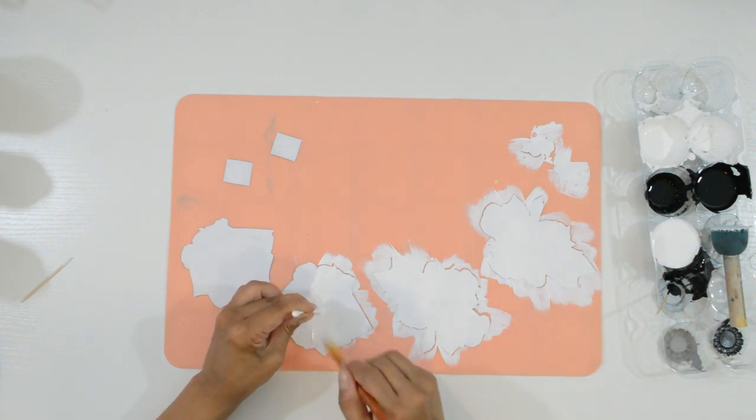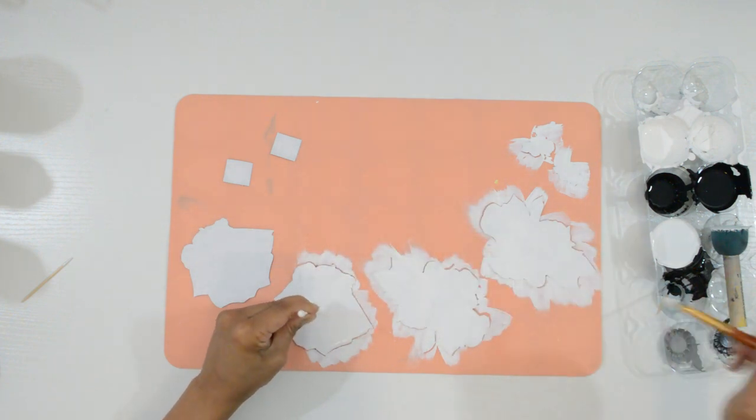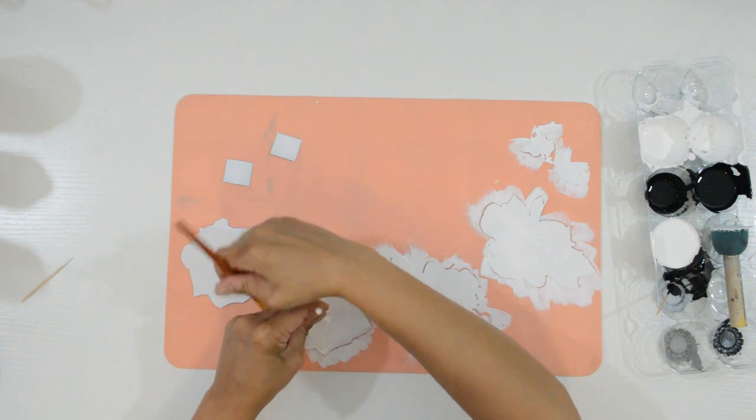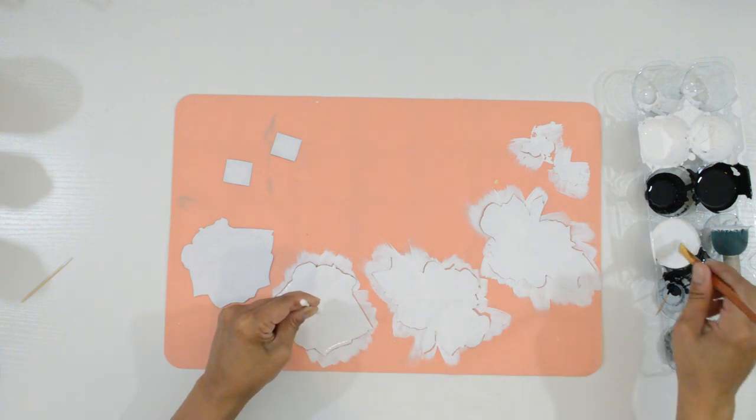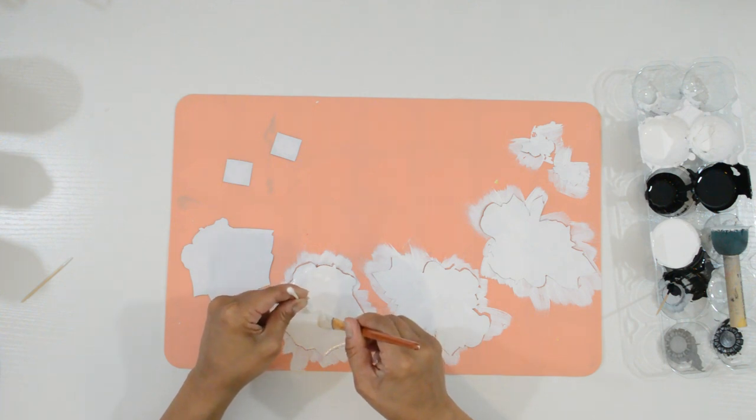The reason you can decoupage this and not paper napkins onto a dark surface is that it's thicker and has a white base, unlike the thin paper napkins. Let's say you have a paper napkin with the design you want, but you can't use it because you want to decoupage it onto a dark base. With this technique, all you have to do is make a copy of your paper napkin and follow these steps.